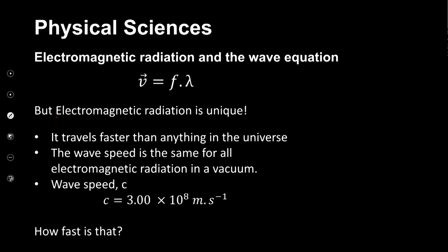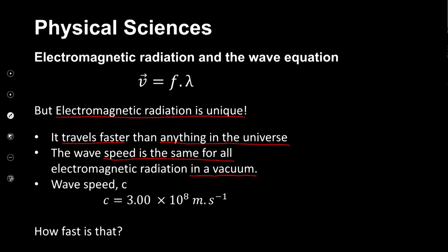Electromagnetic radiation is quite unique in terms of waves — in fact it travels faster than anything else in the entire universe. We are pretty sure that the speed that electromagnetic radiation travels at is as fast as anything can go. Interestingly, the wave speed for electromagnetic radiation is the same as long as the electromagnetic radiation is passing through a vacuum. Therefore, all electromagnetic radiation when passing through a vacuum travels at the same speed. This speed is quite important and so it receives its own symbol: c.